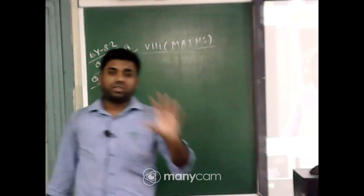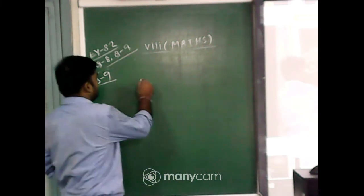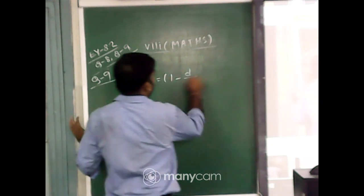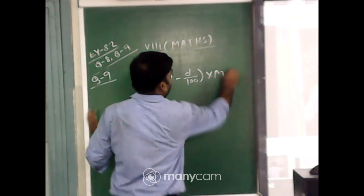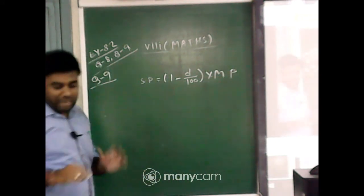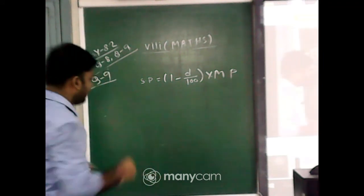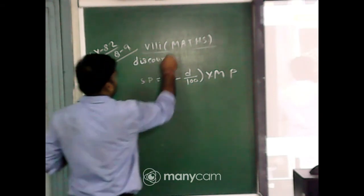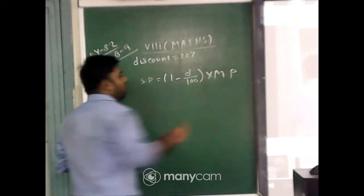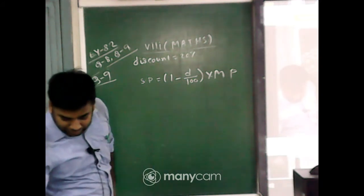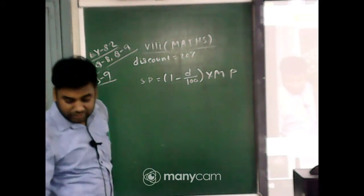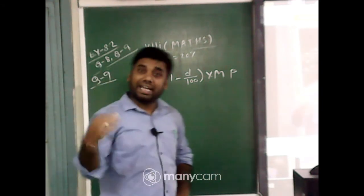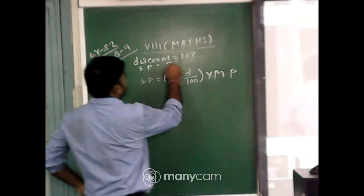We have the formula that we have learned: SP equals (1 minus discount by 100) into MP. MP means mark price. Now discount amount is 20 percent. And which amount Arun paid? That is 1,600. It means SP, Arun had already paid, it means SP. That is SP equals rupees 1,600.